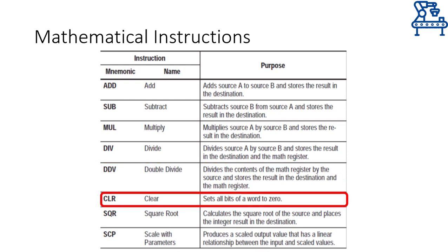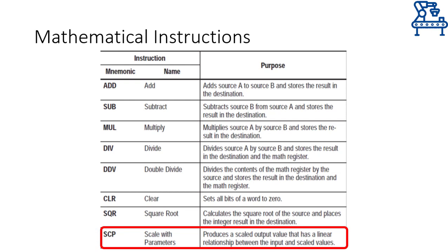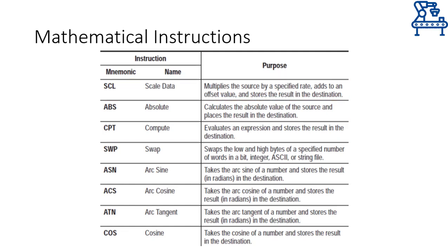The clear instruction can simply clear or reset the contents of the source word to zero, and the square root instruction calculates the square root of the source and places the rounded integer result in the destination address. As for the last instruction on this slide — scale with parameters — it requires a bit of explaining, so I'll explain it separately after a few slides. In this list, the scale data and compute instructions will also be explained separately, whereas the rest of the instructions are quite self-explanatory.